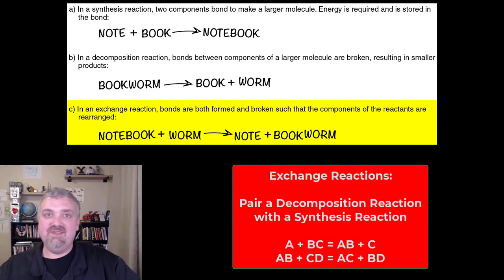Then we have exchange reactions. The example they give here: notebook plus worm equals note plus bookworm. In this example, it's a combination of a decomposition reaction, because you had to break notebook into note and book, and a synthesis reaction, because you had to turn book and worm into bookworm.